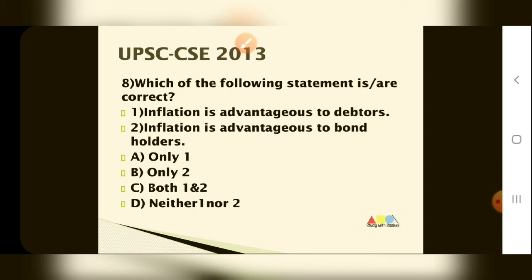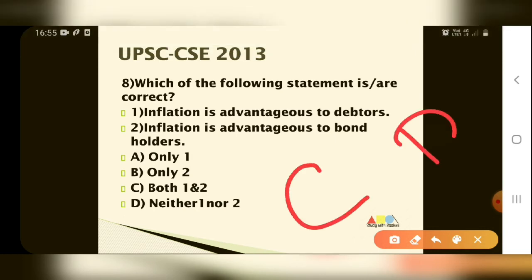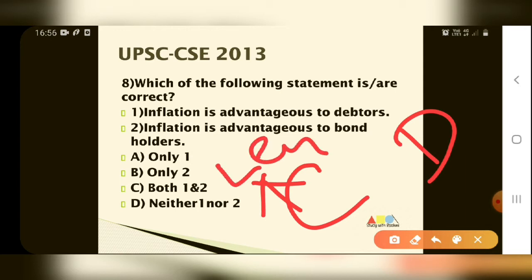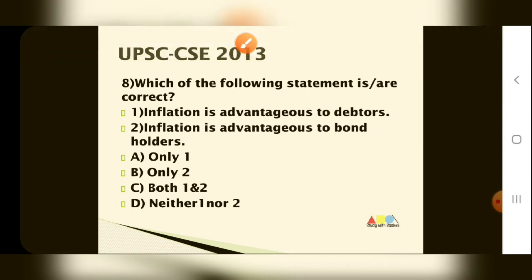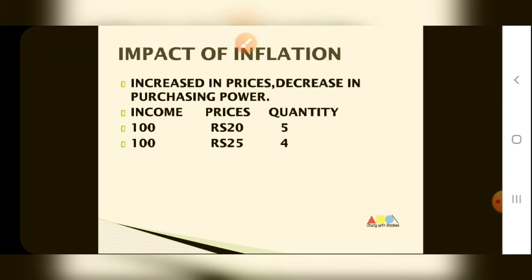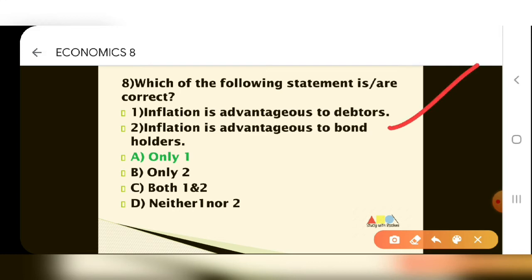Inflation's effect on the creditor and debtor: the loan giver is called creditor and the loan taker is called debtor. In inflation conditions, it is good for the debtor. Statement 1 says inflation is advantageous to the debtor — let's verify this.